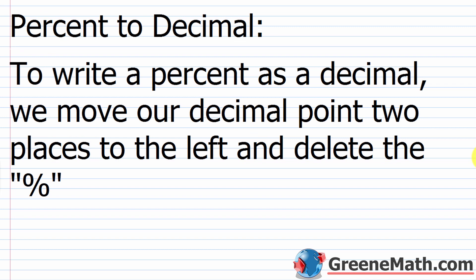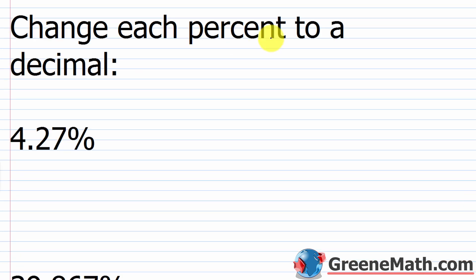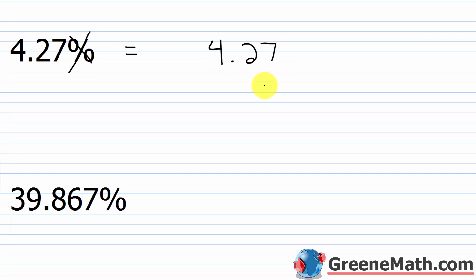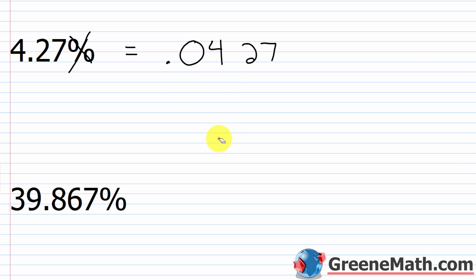Now let's reverse this process and take a percent and go to a decimal. You just reverse what you just did. To write a percent as a decimal, we move our decimal point two places to the left and delete the percentage symbol. Starting with 4.27%: I'll rewrite the number 4.27, drop the percentage symbol, and move the decimal one, two places to the left. I'll add a zero in front for clarity — so 4.27% is equal to 0.0427.